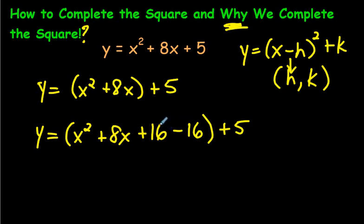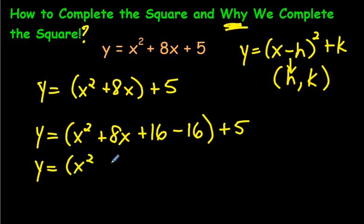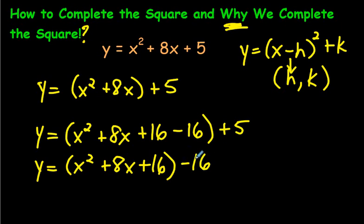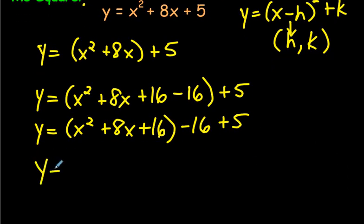We want a perfect square trinomial, which means we want to keep this positive 16 right here. We don't really want the minus 16 inside the bracket, so we're going to take it outside the bracket. There's no coefficient in front here, just an invisible 1, so there's nothing extra we need to do — it's just a minus 16. So we write: x squared plus 8x plus 16, with the bracket closed, and on the outside we have the minus 16, then plus 5.